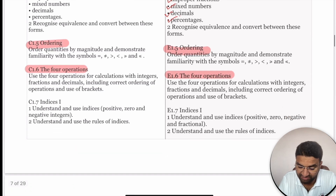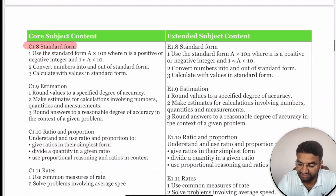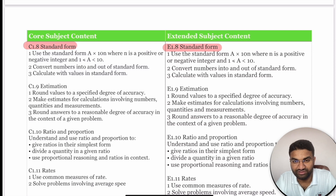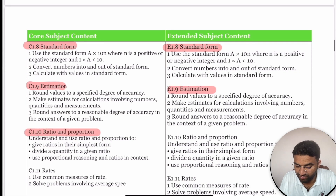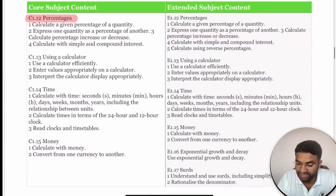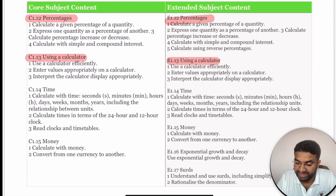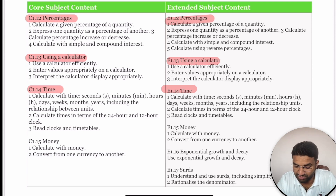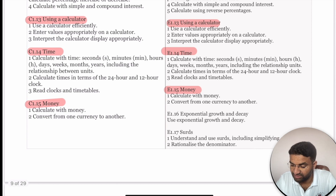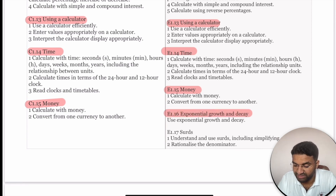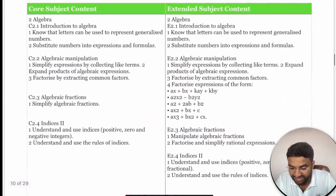Indices are common for both Core and Extended students. Standard form — writing numbers as a × 10ⁿ where a is between 1 and 10 — is also shared. Estimation, ratio and proportion, rates, percentages (including percentage increase and decrease), and simple and compound interest are all common topics. Time and money concepts are also shared. Extended students have two extra topics: exponential growth and decay.